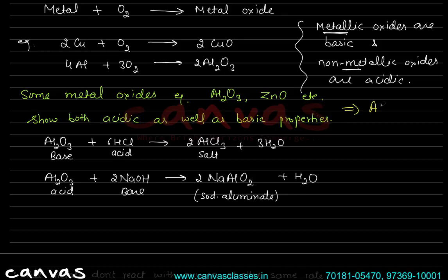The product formed when Al₂O₃ reacts with NaOH is NaAlO₂ (sodium aluminate) + H₂O. Metal oxides that show both acidic and basic properties are called amphoteric oxides. Examples to remember: Al₂O₃ and zinc oxide (ZnO).